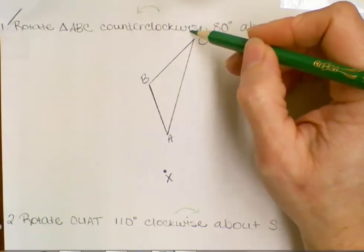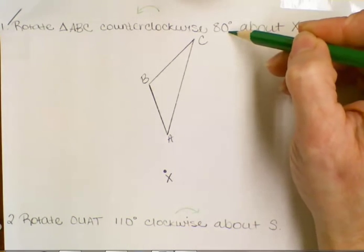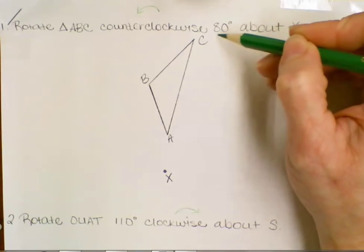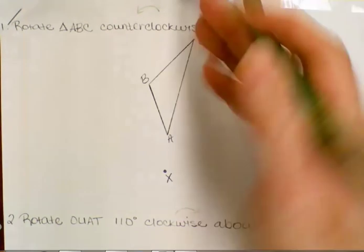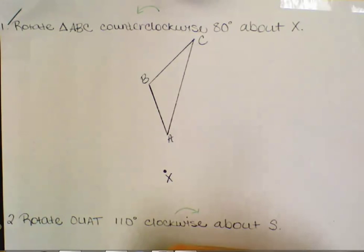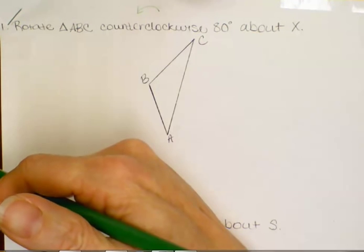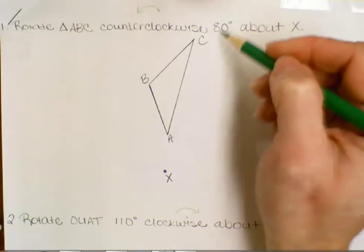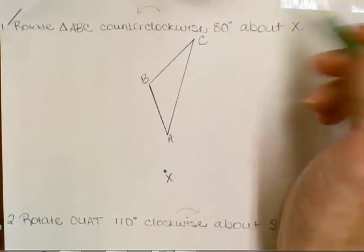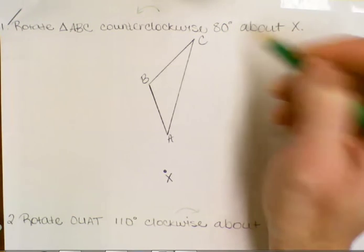The other thing that we have to be given besides the direction is an angle measurement. That's going to tell us how far to rotate it. Do I rotate it all the way upside down, which would be 180 degrees? Do I go a quarter of a turn, which would be 90 degrees? Or some other number. In this case we see 80 degrees. So not quite a quarter of a rotation.